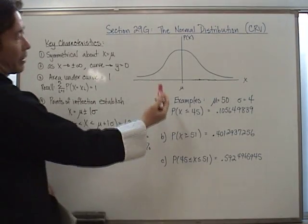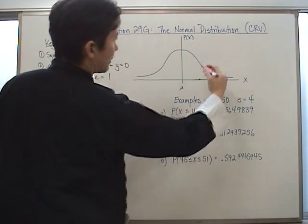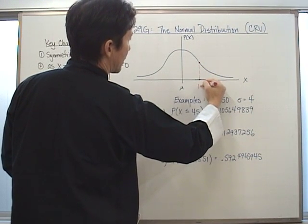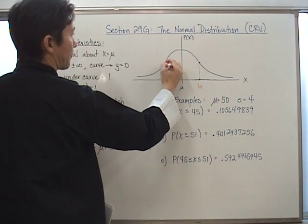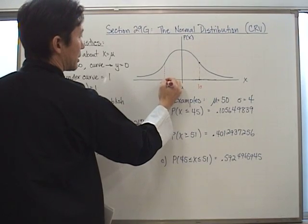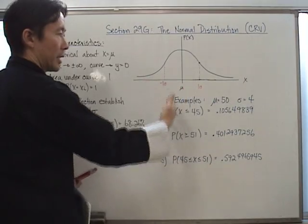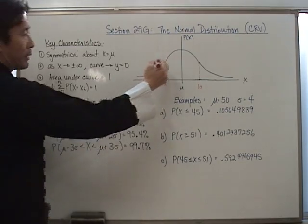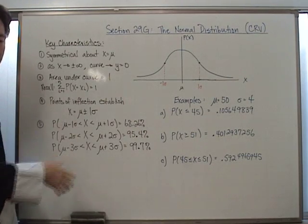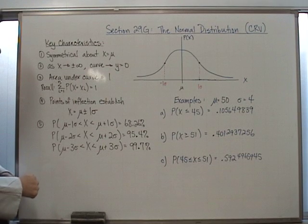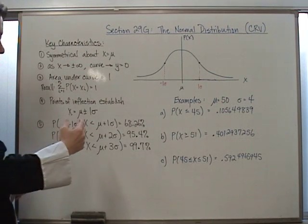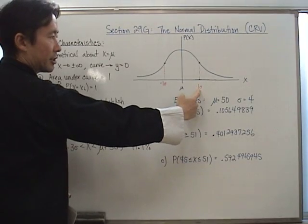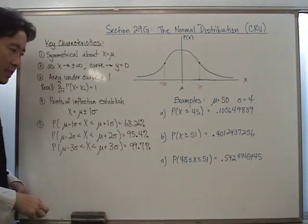Looking at this curve, the point of inflection is right about there. If I go down from that point, this is one standard deviation away from the mean. And being symmetrical, this would also be one standard deviation away in the negative direction. If we look at the probabilities for x values between one standard deviation to the left and one standard deviation to the right of the mean, those percentages add up to 68.26%.